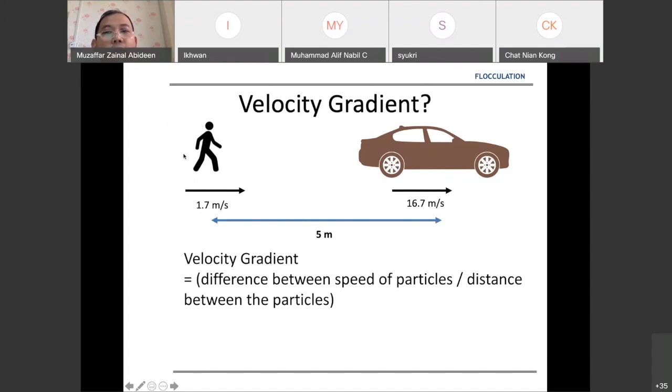When we talk about velocity gradient, it's actually the difference between the speeds of the particles or the speed of these objects divided by the distance between the particles. Try to calculate what is the velocity gradient for my case. The answer is 3 per second - 16.7 meters per second minus 1.7, that's 15, divided by 5 meters, and you will get 3 per second. That is the velocity gradient. The unit of the velocity gradient is per second.